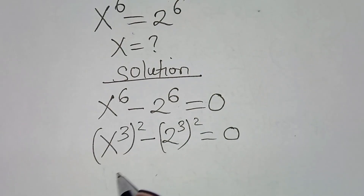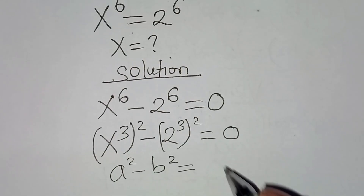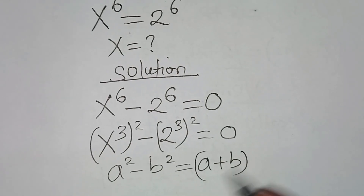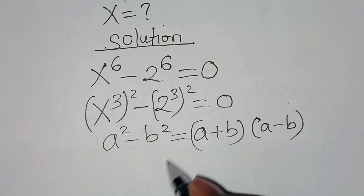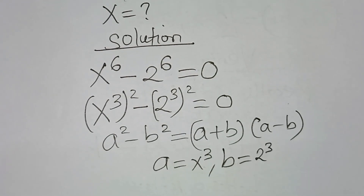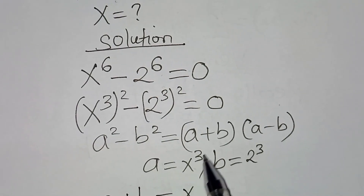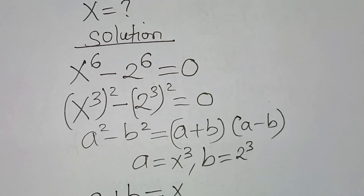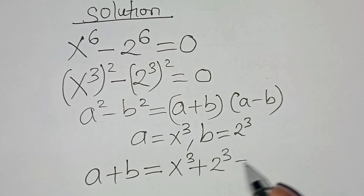This equation is in the form of a squared minus b squared, which is the difference of two perfect squares, expressed as (a plus b)(a minus b). We have a equal to x to the power 3 and b equal to 2 to the power 3. That implies a plus b gives us x to the power 3 plus 2 to the power 3 equals 0. Let's call this equation 1.